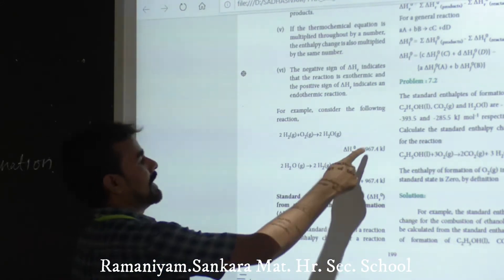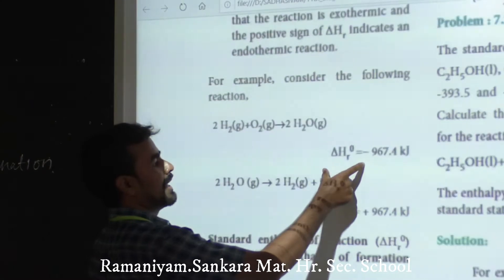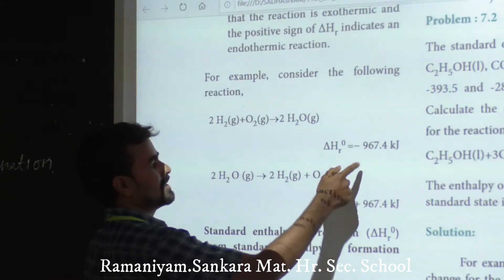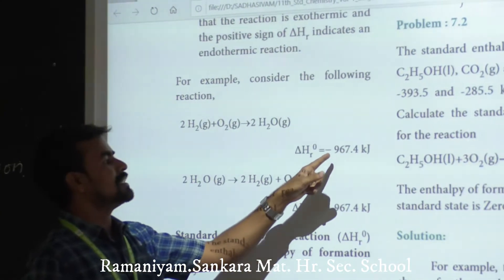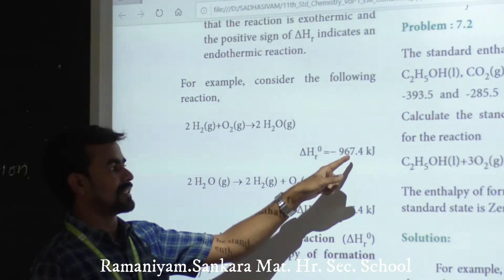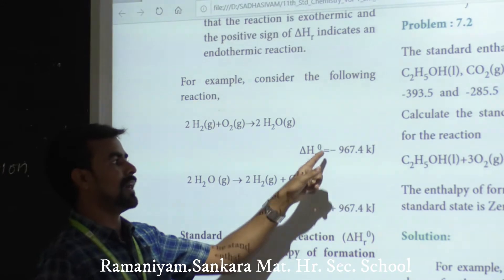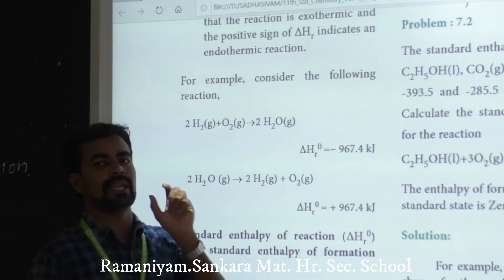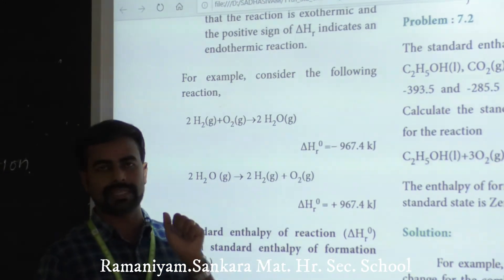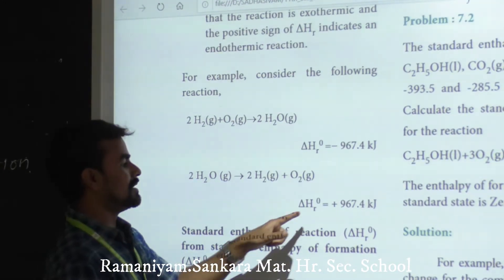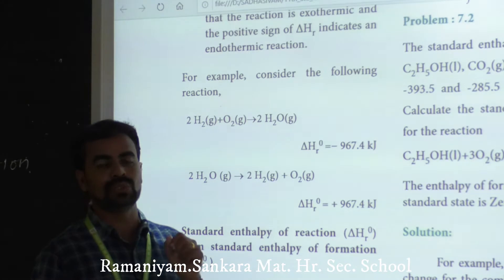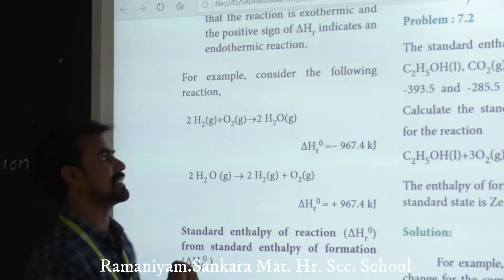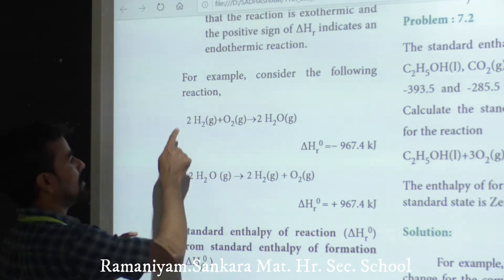For this reaction, the delta H value is minus 967.4, which is a negative sign — so it is an exothermic reaction. A plus sign would indicate an endothermic reaction.